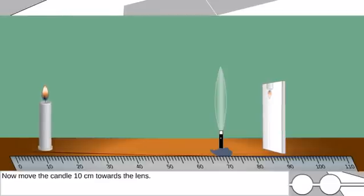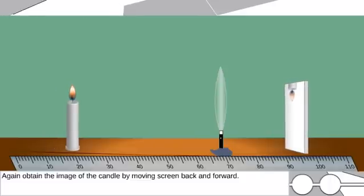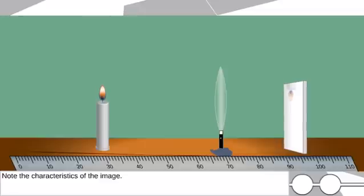Now move the candle 10 cm towards the lens. Again, obtain the image of the candle by moving screen back and forward. Note the characteristics of the image.